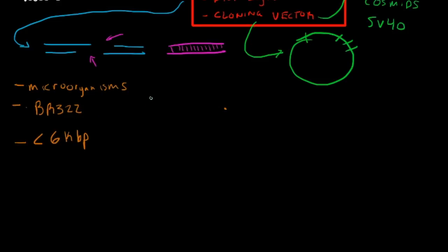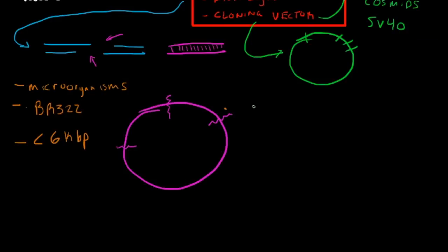If we were to draw a plasmid here, and let's pretend we have an ECO R1 cut site there, a SA2 cut site there, and a PST1 cut site right here. I'm not going to write those actually down, but I am going to draw right here in this section.